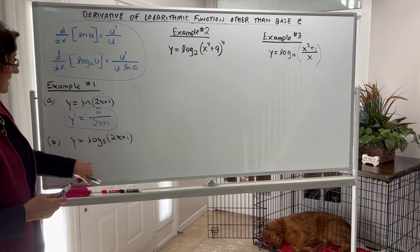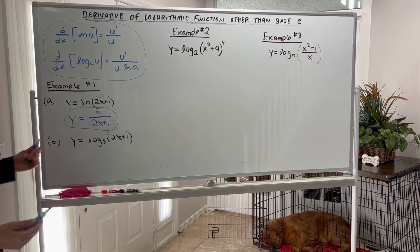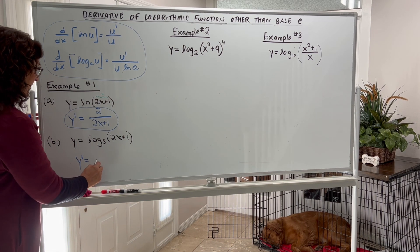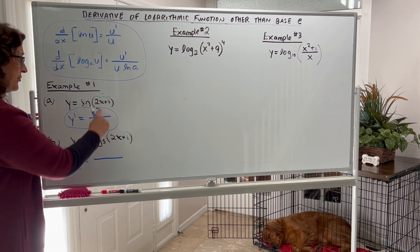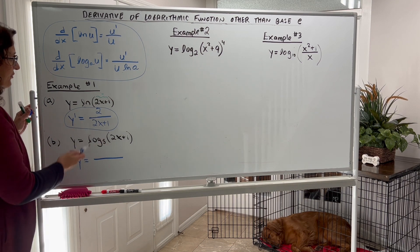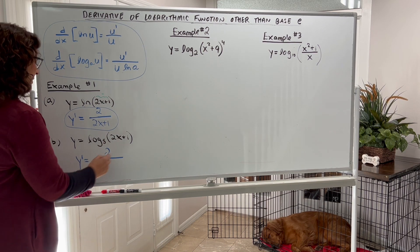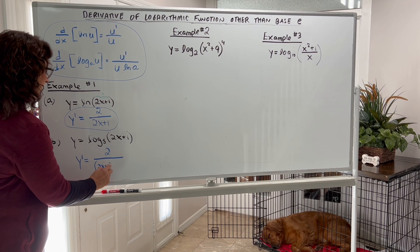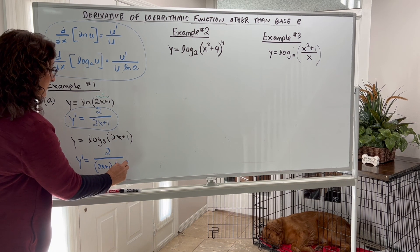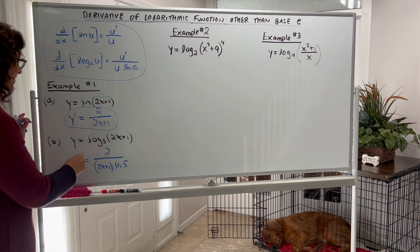What if the base is not e? What if it's 5, 2, 3, 10, 7, or something? You're still going to go through the same behavior. I kept the expression the same, so my u quantity is 2x plus 1. We take the derivative of 2x plus 1 — that's 2 — put it over 2x plus 1, and then one more piece: in the denominator, we have to multiply by natural log of the base. The base here is 5, so multiply by natural log 5, and here is our answer.